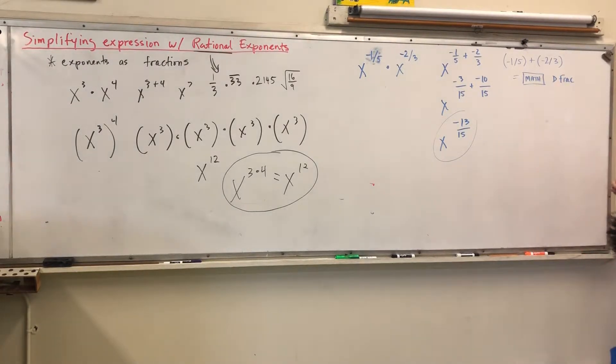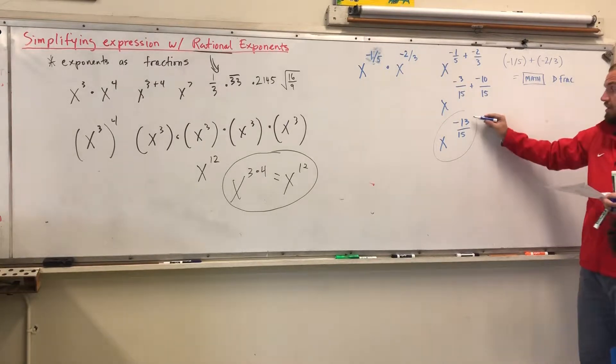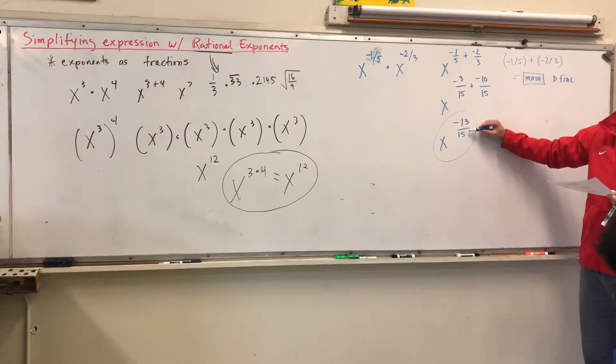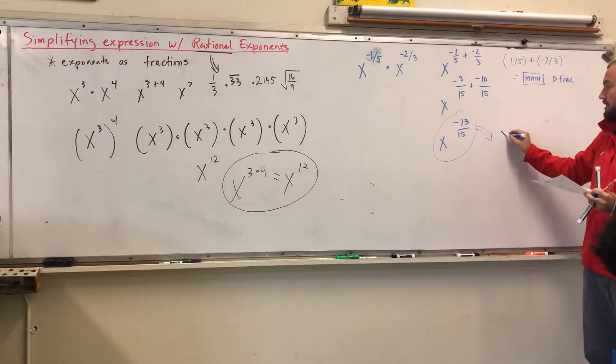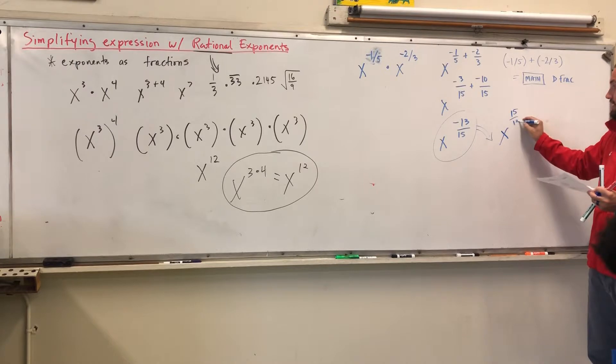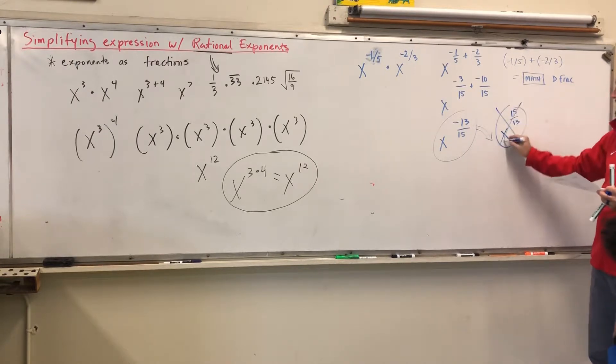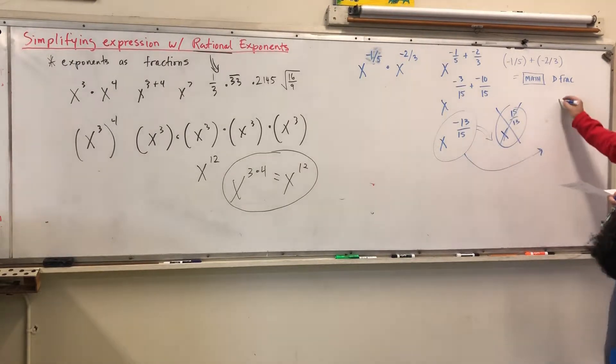Negative exponent? Yeah. Are we going to flip the fraction? No. Don't make the mistake of saying, okay, well, this is going to be X to the 15 over 13. That's not what you're doing. You're actually moving this. Because it is a negative exponent, you're moving it to the bottom. And that will be your answer.